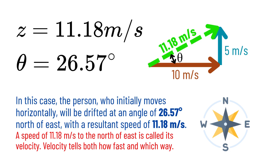So, what happened to our swimmer? Even though the swimmer aimed straight east, the current pushed him off course. The swimmer ended up drifting at 26.57 degrees north of east, with a speed of 11.18 meters per second. This idea isn't just for swimming — the same principle applies to rowing a boat, kayaking, or even flying a drone in windy weather. Can you think of other real-life situations where vectors come into play?